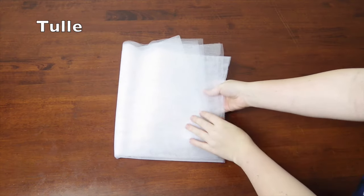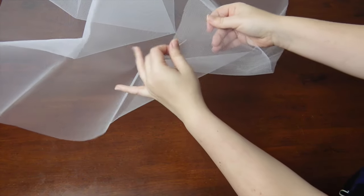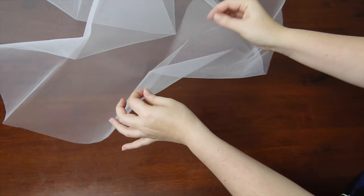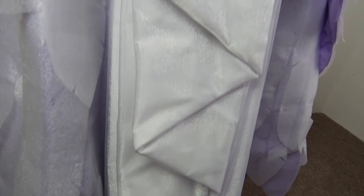If you need something with a little bit more oomph though, the next one up is tulle. Tulle comes in a range of different strengths, from very soft bridal tulle, right up to something that almost resembles the thickness of flywire. I used a strip of tulle in the bottom of this waterfall tailpiece, to help give it a little bit more definition within the folds.